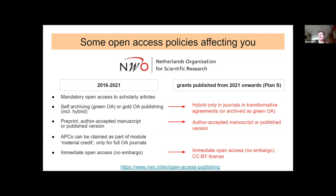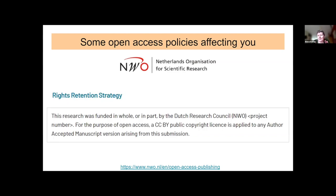Regarding immediate Open Access, NWO and Plan S allow you to archive publications in a repository even when the journal says you cannot, or only after an embargo. If you have NWO funding, you can add a rights retention statement to your submission stating that, because you are funded by NWO, you retain the rights to distribute your author accepted manuscript under a CC BY license immediately — and with that, you can archive it in the repository even if the publisher has a different policy.